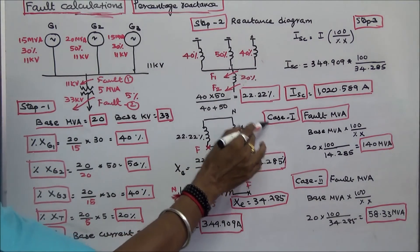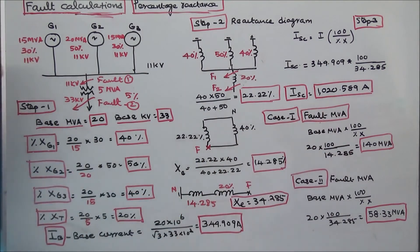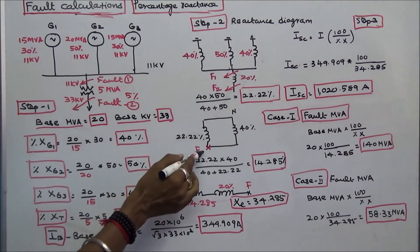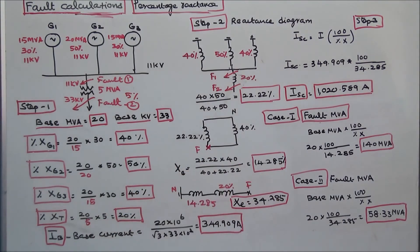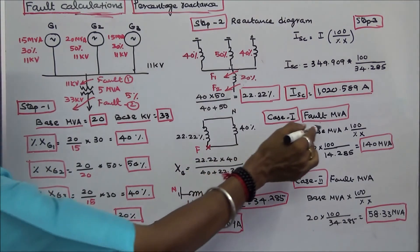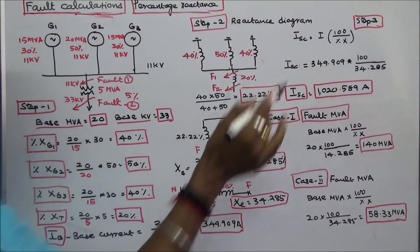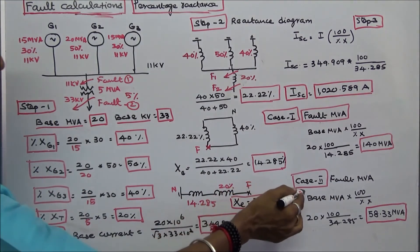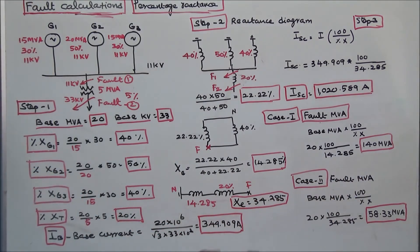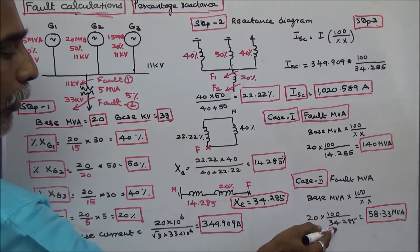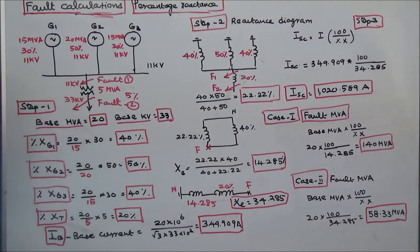Case 1: fault MVA is equal to base MVA × 100 divided by percentage X. For fault at F1, the equivalent reactance is 14.285%, so fault MVA = 20 × 100 / 14.285 = 140 MVA. Case 2: fault MVA = 20 × 100 / 34.285 = 58.33 MVA.